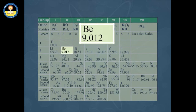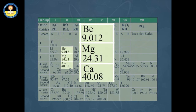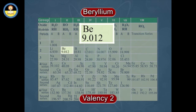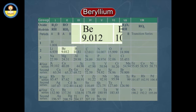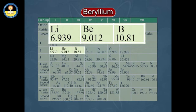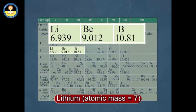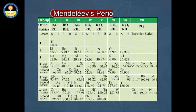Further, properties of beryllium were similar to those of magnesium and calcium of group 2A. Therefore, valency 2 was assigned to beryllium, which gave it an atomic mass of 4.5 multiplied by 2, i.e. 9. As a result, beryllium was placed at its proper position between lithium having atomic mass 7 and boron having atomic mass 11.